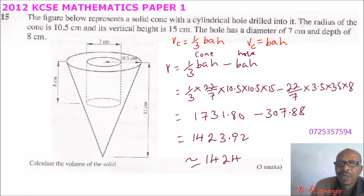So that's how you work it out. The important thing here is you should be able to know the formula for finding the volume of a cone, the formula for finding the volume of a cylinder, which is actually a hole. Then once you subtract the area of the hole from the area of the cone, then you should be able to get the volume of the solid. So that's how you work out that question and you'll be able to get three marks.